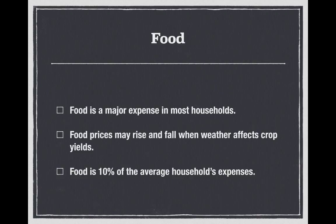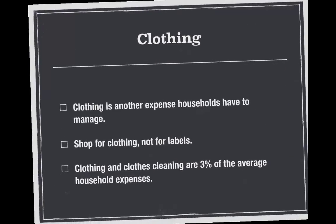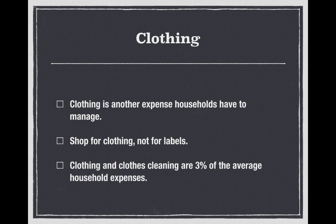Food is another major expense in most households. Food prices may rise and fall when weather affects crop yields — if California has a drought, certain crops may become much more expensive or hard to find. Food is 10% of the average household's expenses. Clothing is another expense households have to manage. Shop for clothing, not for labels. Clothing and clothes cleaning are 3% of the average household's expenses.